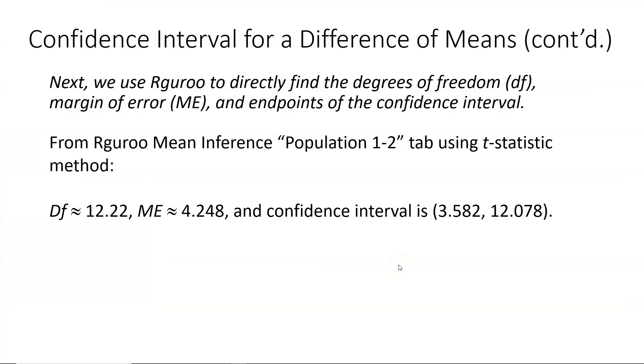Now that I've shown how to use our guru to find our confidence interval information that we need, you'll see that I have on the slide the work you would need to write down on paper. So on paper, you would need to write from the our guru mean inference population one minus two tab. Using t-statistic method, we then write down the three key pieces of information we need: degrees of freedom, margin of error, and the confidence interval. Notice the margin of error and confidence interval are written to three decimal places in this case, because that's what we have been rounding our calculated values to, one decimal place more than the sample statistics. And then my degrees of freedom is rounded to two decimal places.